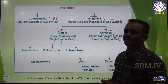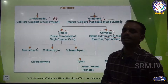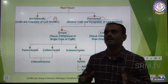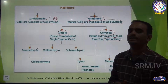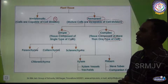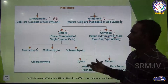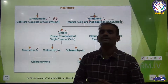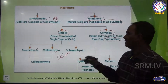In simple permanent tissue, there are three types: one is parenchyma, second one is collenchyma, and third one is sclerenchyma. In case of complex permanent tissues, the tissue is made up of more than one type of cells.